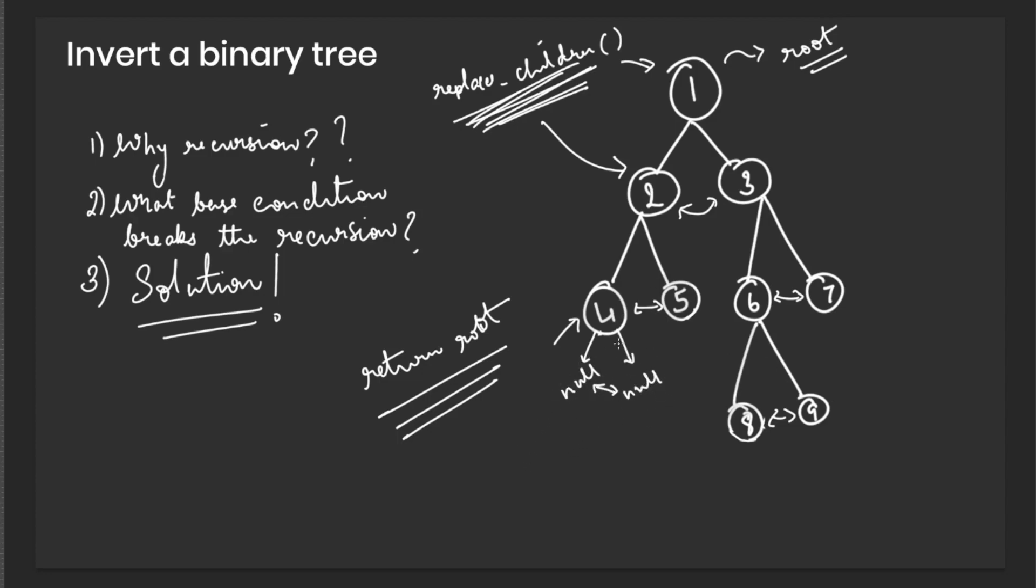And then this is where the recursion stops, when we give the null pointer to our replace children function. And we find out when we go to find out the null.left. And this is where the algorithm completely fails and breaks down and our program crashes.